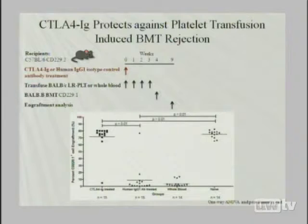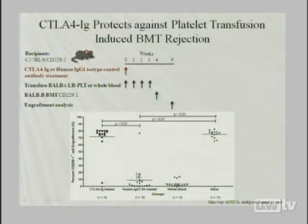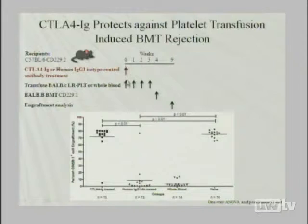Memory T cells have a much lower threshold for co-stimulatory requirements to activate, so when you get CTLA-4 Ig, all of your previous immunity — vaccination status, previously cleared pathogens — those responses remain intact. It only blocks naive responses to new antigens. In transfusion we have a unique opportunity because we know precisely when you encounter those new antigens, because we do it to you. In mice, the use of CTLA-4 Ig as a monotherapy completely protects against the bone marrow transplant rejection biology we're studying.